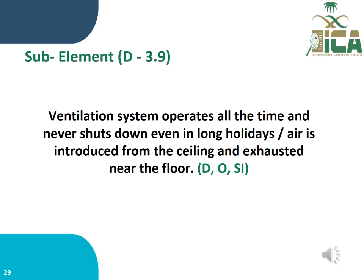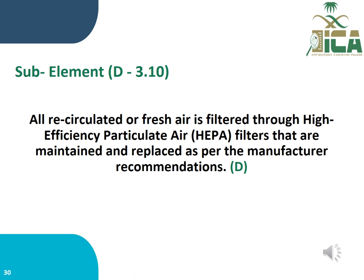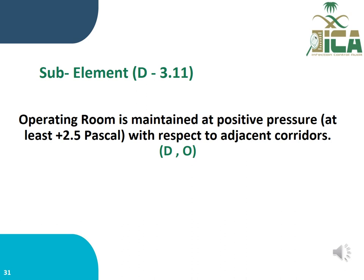Sub-element D3.9: The ventilation system operates at all times and is never shut down, even during long holidays. Air is introduced from the ceiling and exhausted near the floor. Sub-element D3.11: The operating room is maintained at positive pressure of at least 2.5 Pa with respect to adjacent corridors. This is done by documentation and observation.